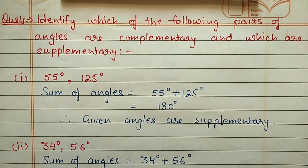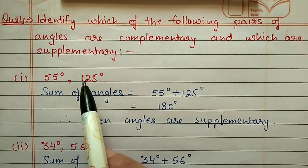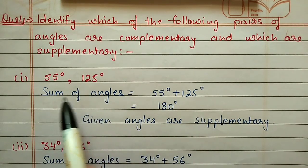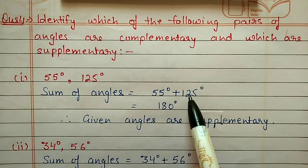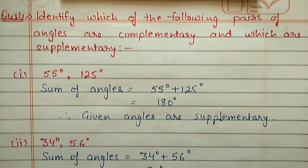Question number four: identify which of the following pairs of angles are complementary and which are supplementary. We add the two angles — if the answer equals 180 degrees, the angles are supplementary; if 90 degrees, they are complementary. First: 55 degrees and 125 degrees. Sum is 55 plus 125 equal to 180 degrees, so they are supplementary angles.